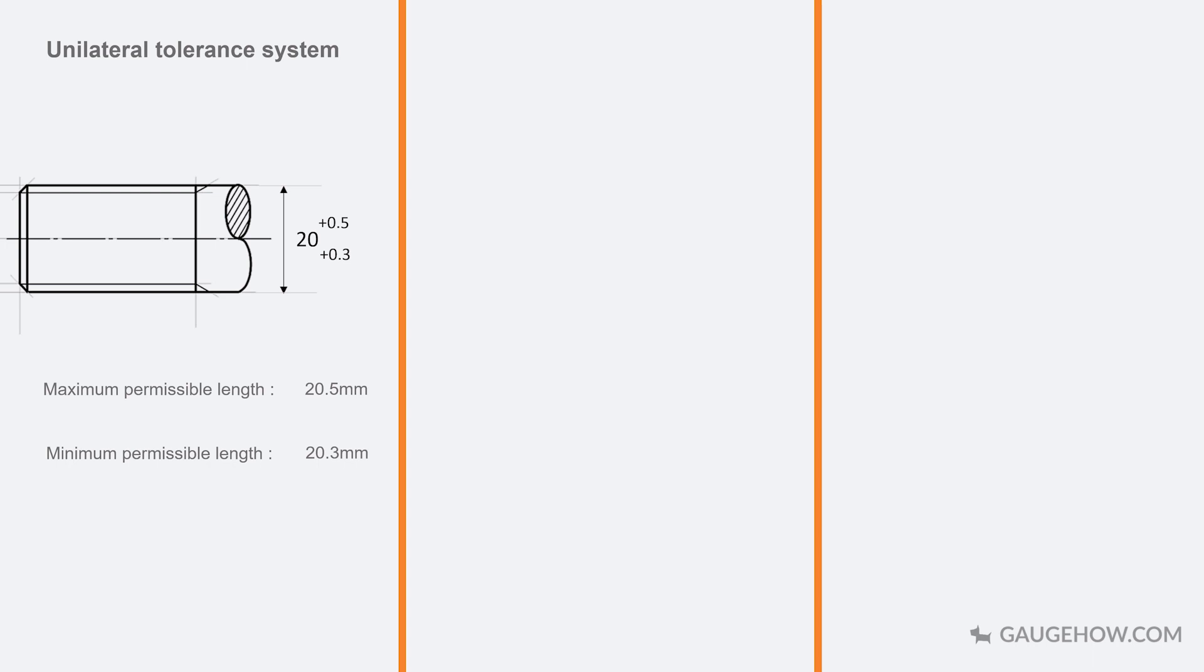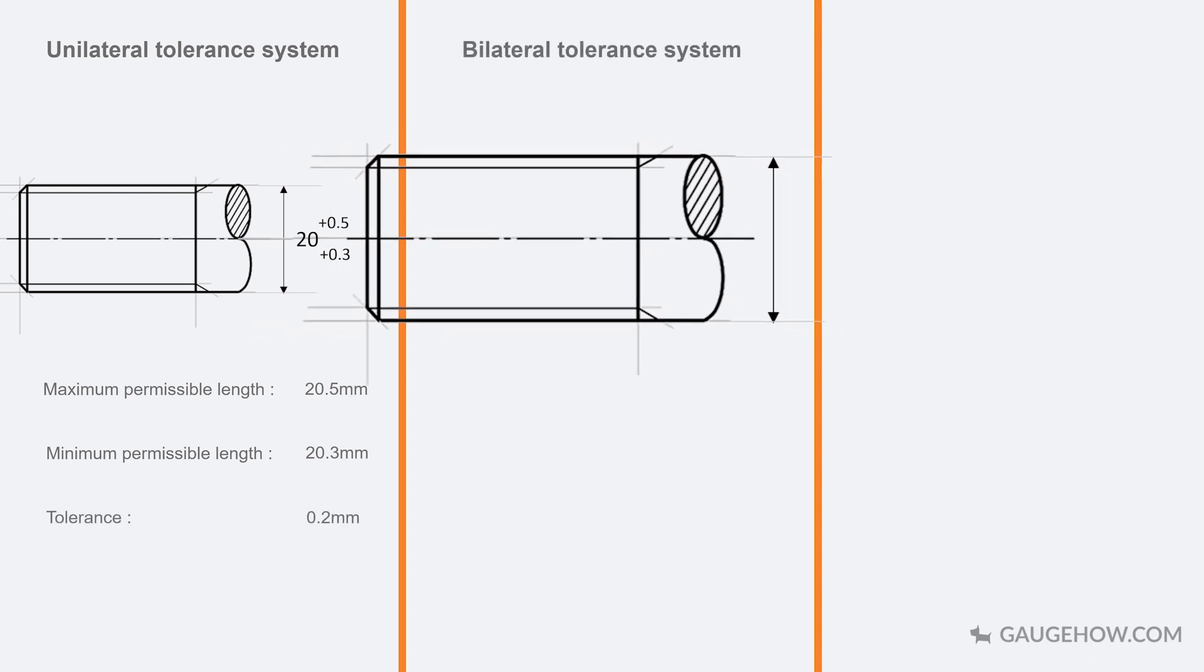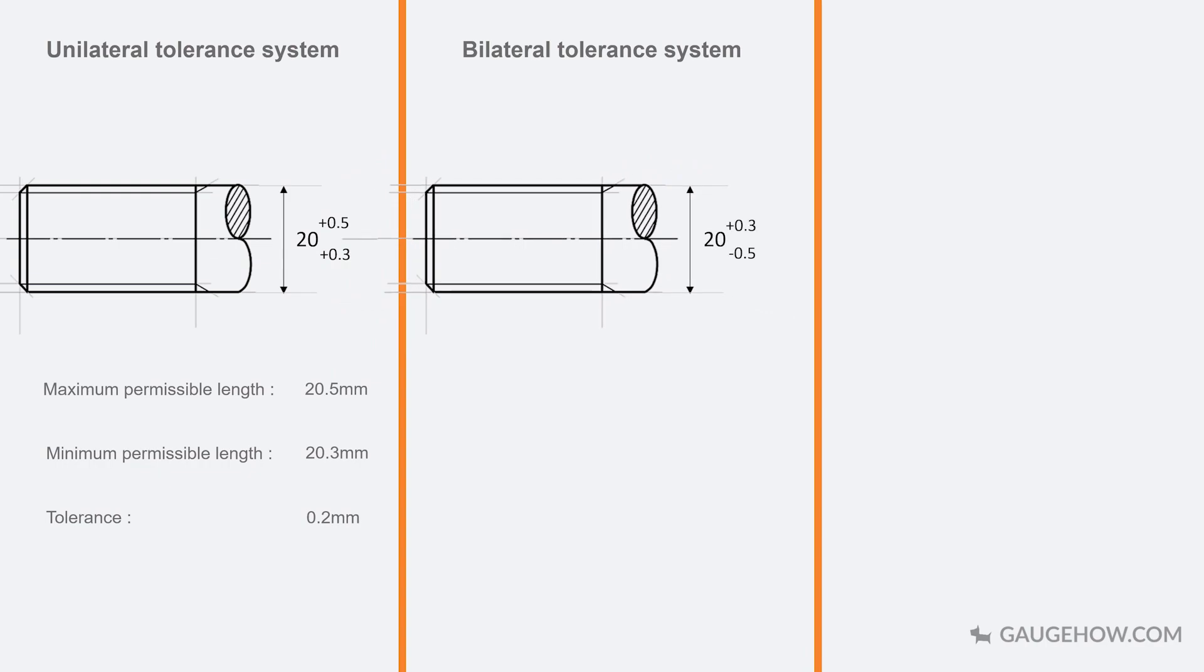In bilateral dimension system, the tolerance is provided on both directions from the basic size. For example, in this rod, the tolerance is given on the positive direction as well as the negative direction which is 20 plus 0.3 to minus 0.5 mm.